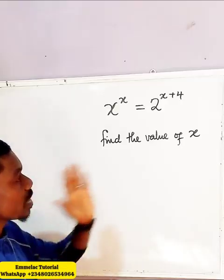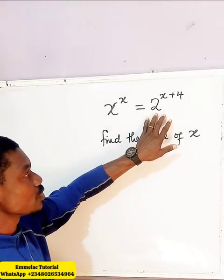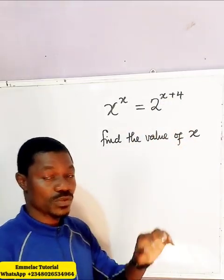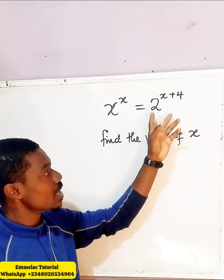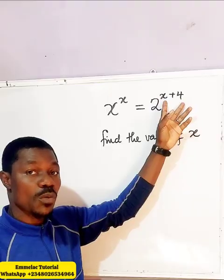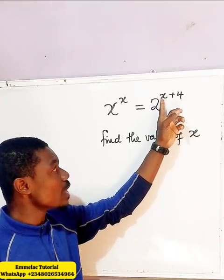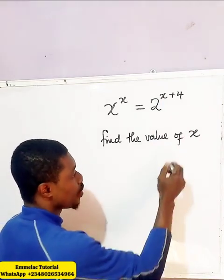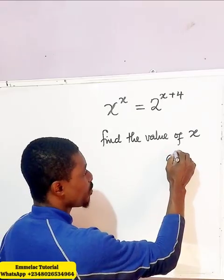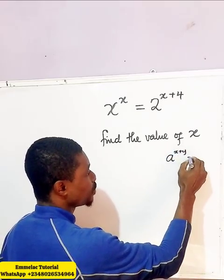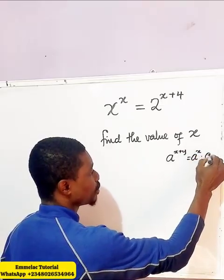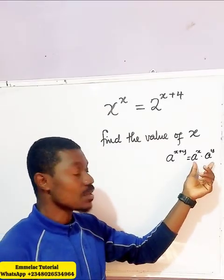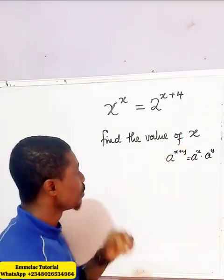Looking at the right-hand side, we have 2 raised to the power of x plus 4. Whenever you see an exponential equation in this pattern, we need to expand x plus 4. According to the law of indices, a raised to the power of x plus y gives us a raised to the power of x, times a raised to the power of y. This is the pattern we use to undo this.